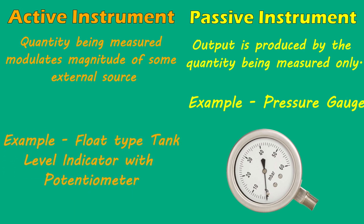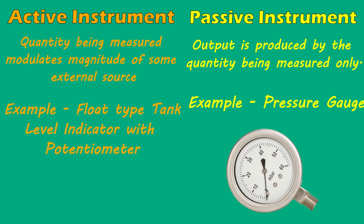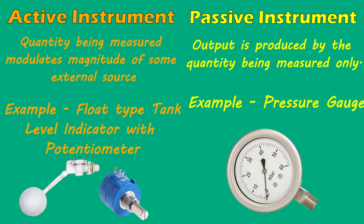An example of an active instrument is a float type tank level indicator with potentiometer. In this kind of instrument, tank level changes the float position, which in turn changes the position of the potentiometer arm, which changes the electrical signal. Here we see an external energy source is being modulated by the quantity being measured, so it is an active instrument.